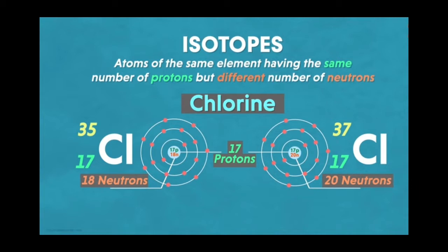In the previous videos, we have learnt about isotopes. What is an isotope? Atoms of the same element with the same atomic number but different mass number.